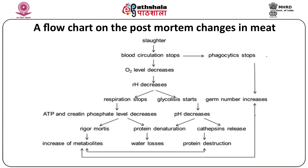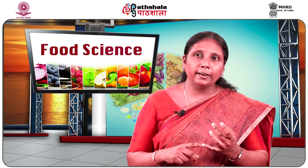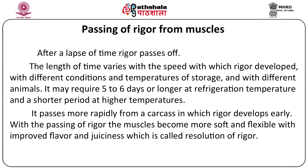When pH decreases and permanent bonds are established between actin and myosin, rigor mortis — the stiffening of the muscles — sets in. After some time, the proteins in the muscle get denatured and the action of proteolytic enzymes begins, leading to protein denaturation. The muscles become acidified and pass into the rigor mortis stage. After a lapse of time, rigor passes off or gets resolved.